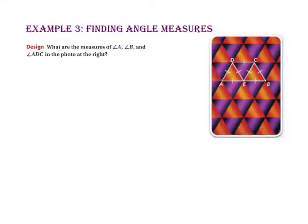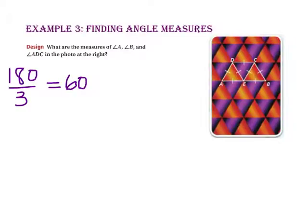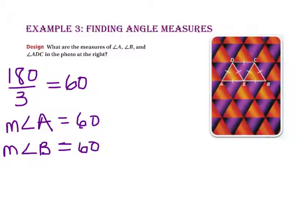In Example 3, we find angle measures. What are the measures of angle A, angle B, and angle ADC? Since triangles ADE, BCE, and DCE are all equilateral, they are also equiangular. The sum of each triangle's angles is 180 and they are all congruent, so each angle measures 60 degrees. Since angle ADC consists of two 60-degree angles, its measure is 120 degrees.